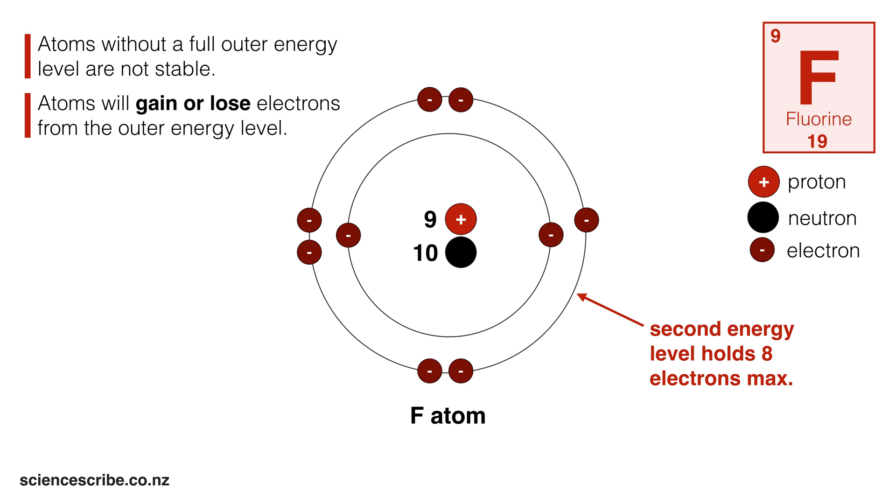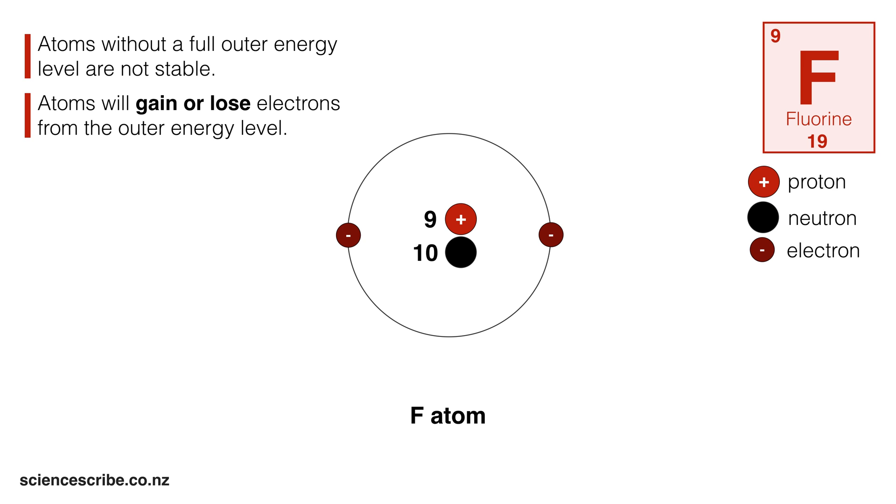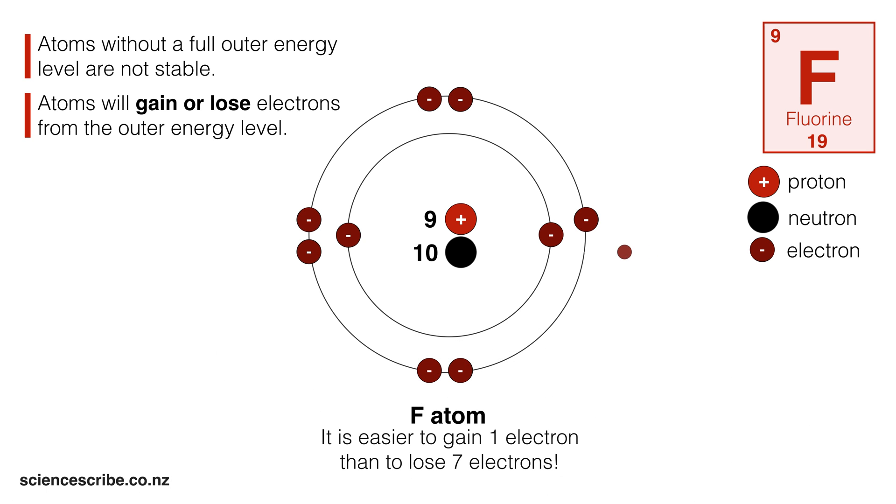So what's going to happen? Well atoms can gain or lose electrons from this outermost energy level, so that it can get that full shell. To do this, the fluorine atom could lose 7 electrons, or it could gain 1 new electron.